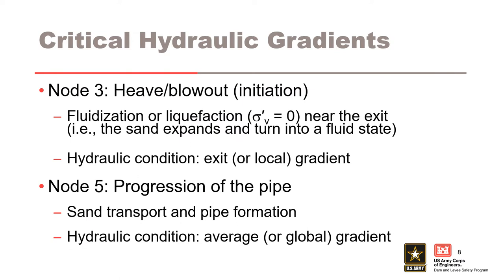Two types of hydraulic gradients are evaluated for backward erosion piping. Node 3 assesses the likelihood of heave or blowout, which involves fluidization or liquefaction near the exit — the classic Terzaghi zero-effective stress condition. There is a critical gradient above which soil particles are detached, assessed using exit or local gradients. Node 5 assesses the hydraulic condition for progression of the pipe upstream or riverward, considering sand transport and pipe formation, assessed using average or global gradients.